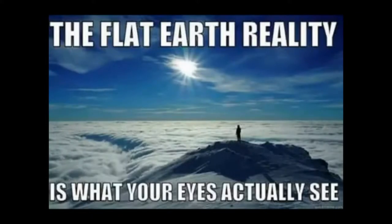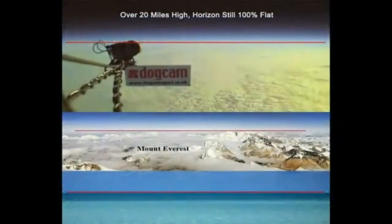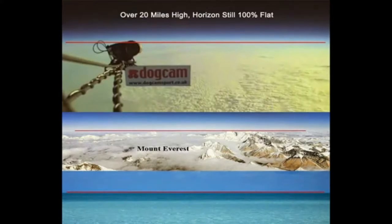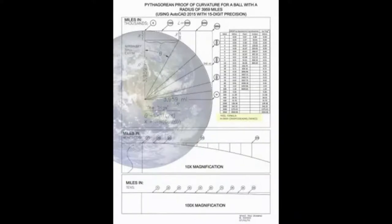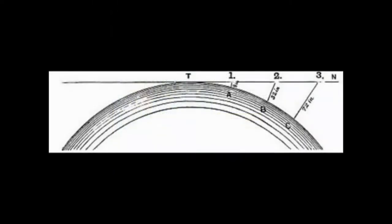If we were living on a whirling ball earth, every pond, lake, marsh, canal, and other large body of standing water, each part, would have to comprise a slight arc or semicircle, curving downwards from the central summit. For example, if the ball earth were 25,000 miles in circumference, as NASA and modern astronomers say, then spherical trigonometry dictates the surface of all standing water must curve downwards an easily measurable eight inches per mile multiplied by the square of the distance.